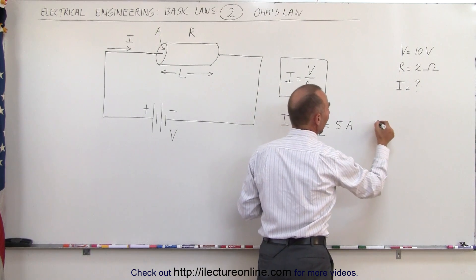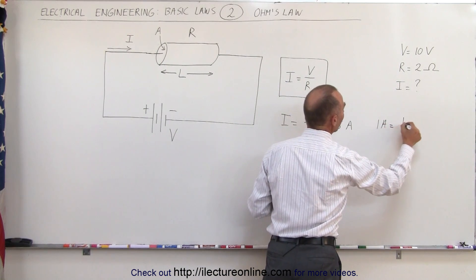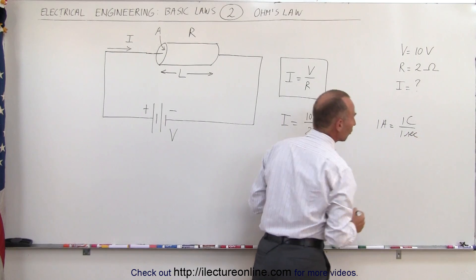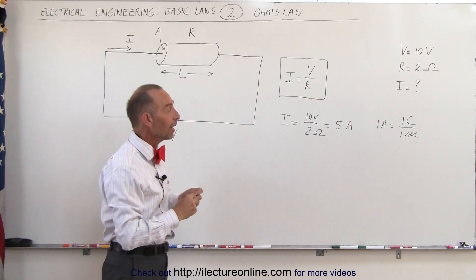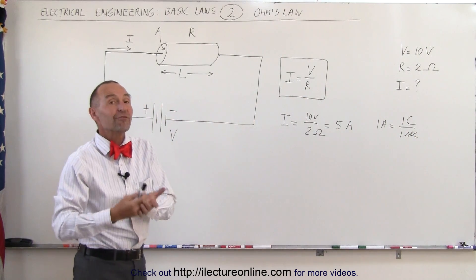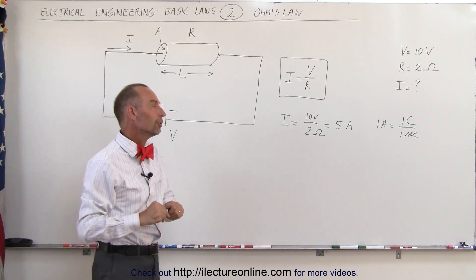Amps is defined as 1 amp equals 1 Coulomb per 1 second. So it's the amount of charge that flows per unit time, and 5 amps would be 5 Coulombs per second. That is actually quite a bit of current.